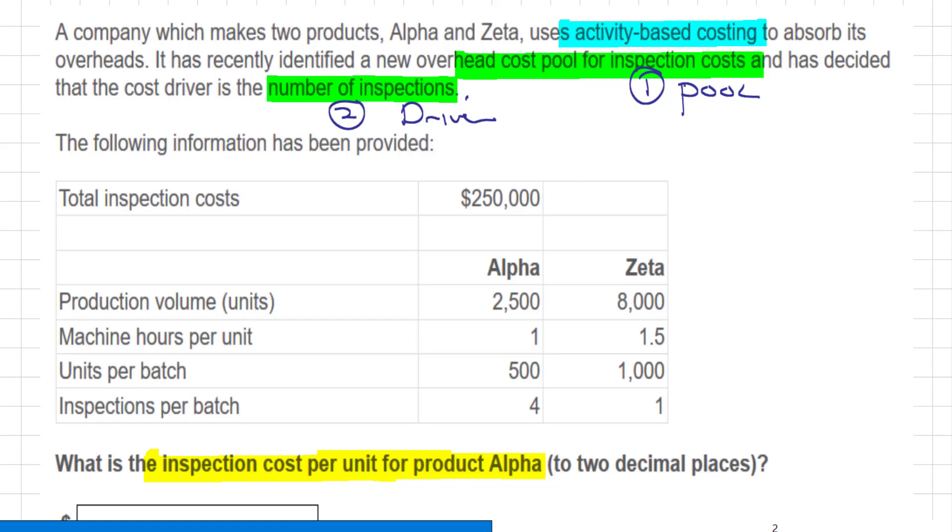Okay, do we see the cost pool? Sure we do, right here, 250,000. And this is the classic, everybody. We're working off of batches.